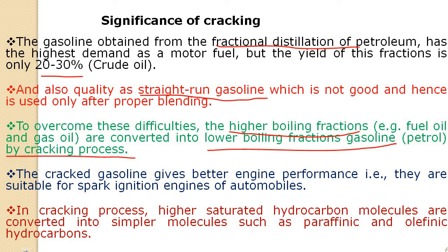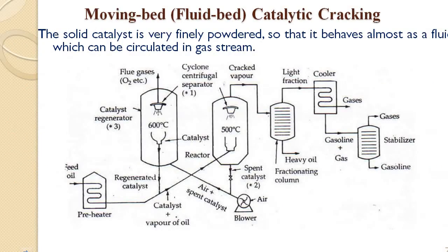We will now see one method called the moving bed method, or fluid bed catalytic cracking. In this method, a very finely powdered catalyst almost behaves like a fluid and circulates through the system. The feed oil — heavy oil — is allowed to pass through a preheater maintained at around 500 to 550 degrees centigrade, where the heavy oil is converted to vapor.